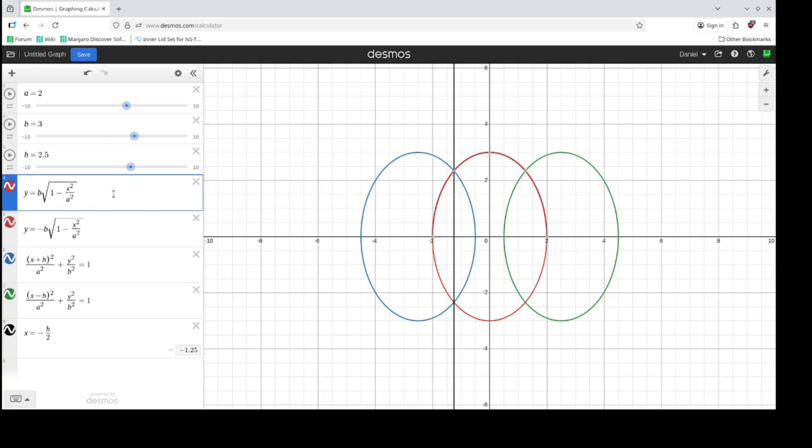And we know that now from what we found down here, this is going to go from minus h over 2 to positive h over 2. Let's do the same thing on this side.